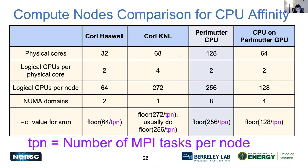This slide is copied over from Eric's slide deck and shows the compute elements available. Looking at the rightmost column for Perlmutter GPU nodes: on the CPU nodes you have two sockets and on the GPU nodes you have one. So total physical cores is halved. The logical CPUs per physical core — the hardware threads — remain the same because they reside within the core. Total logical CPUs per node is also halved. And the NUMA domains are also halved: we have four NUMA domains, while Perlmutter CPU nodes have eight.